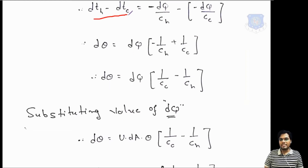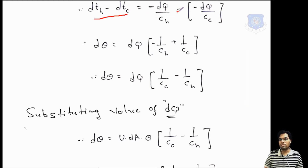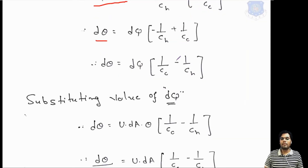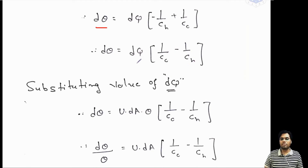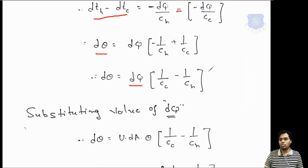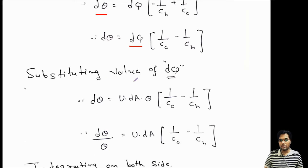So DTH minus DTC equals (-DQ/CH) minus (-DQ/CC). Since DTC = -DQ/CC, the double negative becomes positive. Taking DQ outside the bracket gives: D(theta) = DQ·(1/CC - 1/CH). Substituting DQ = U·DA·theta, we get: D(theta) = U·DA·theta·(1/CC - 1/CH). Dividing both sides by theta: D(theta)/theta = U·DA·(1/CC - 1/CH).